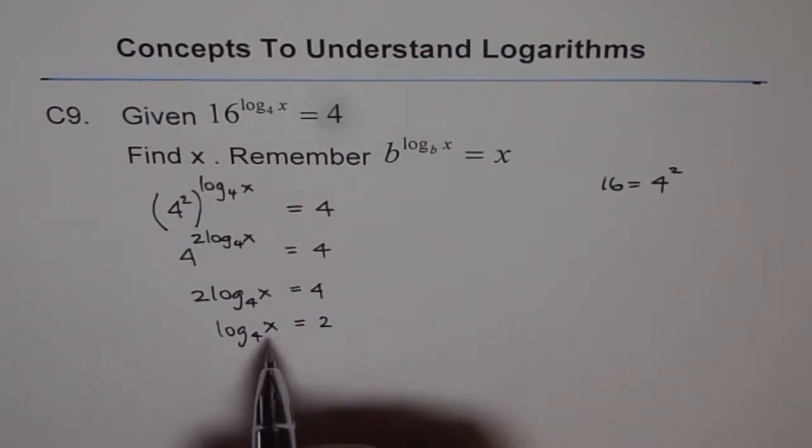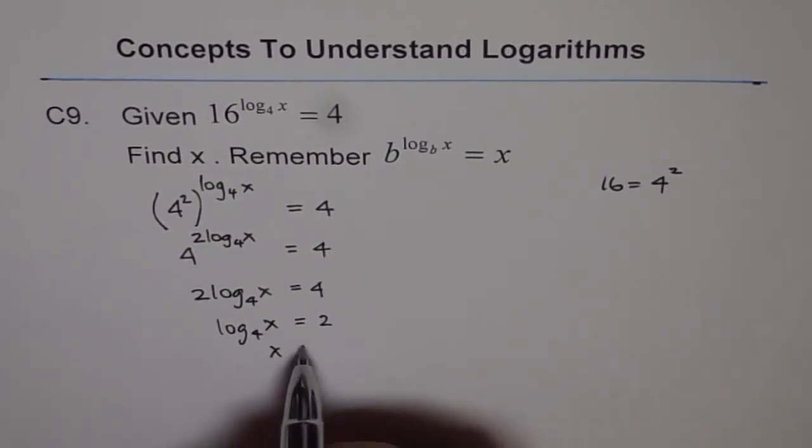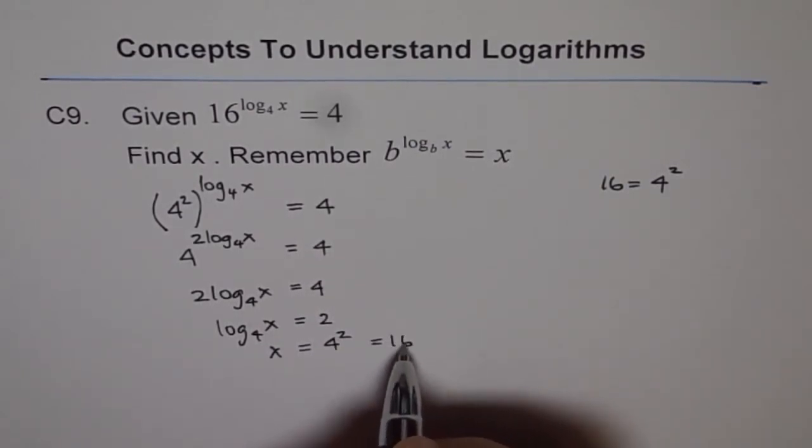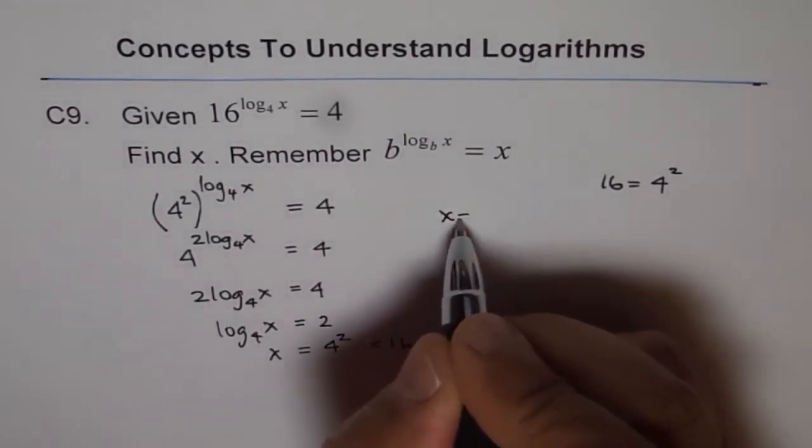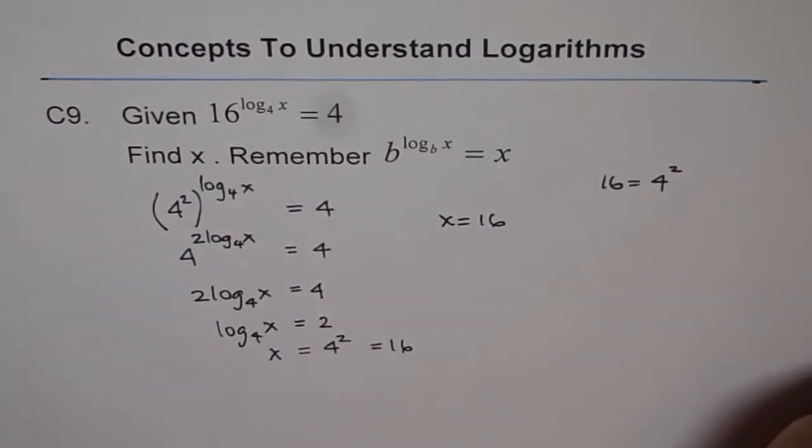Now from here, we can write this in exponential form. And then we get x equals 4 squared. That is 16. So we get x equals 16 as our answer.